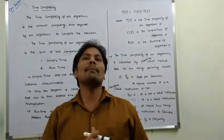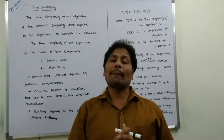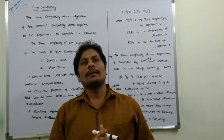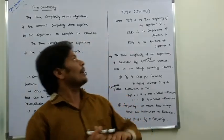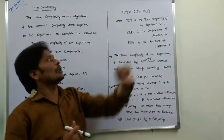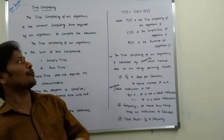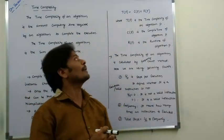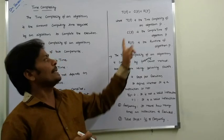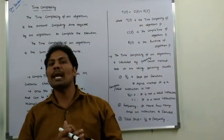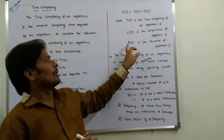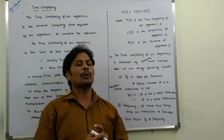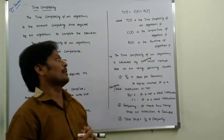Run time of your program depends on the particular problem instance. So T(P) equals C(P) plus R(P), where C(P) is the compile time of program P and R(P) is the runtime of algorithm or program P.